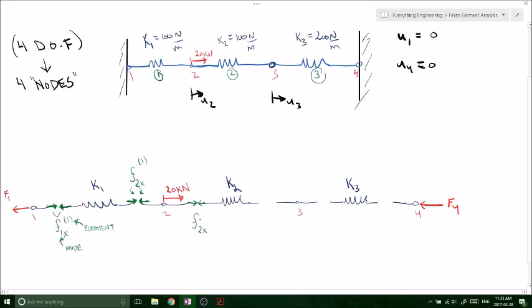We'll still annotate this as lowercase f, so the internal force at the second node, but now we're looking at the second spring, so in brackets superscript it's going to be a two. And those are going to be equal and opposite signs. Similarly, it's going to be the same thing at node number three: F3x.